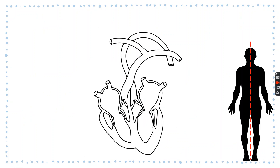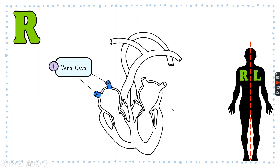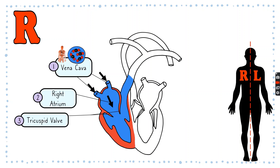If you look at the diagram, remember that you are pretending you're a doctor looking at your patient. So this would be the right-hand side and over here would be the left-hand side. So this is the right side of the heart and this would be the left side. At the right side you have the vena cava, then the right atrium, and the tricuspid valve. I try to remember it as 'tri' meaning three — and that's how I remember it's on the right-hand side.